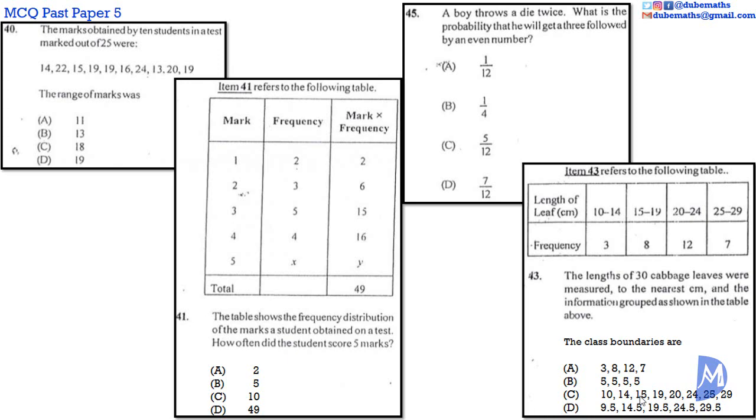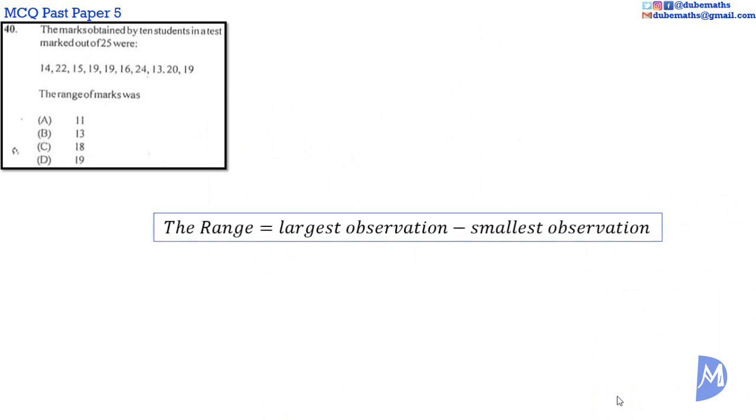Okay, let's go. Question 40. The range is the difference between the largest observation and the smallest observation. The largest observation was 24, and the smallest observation is 13.